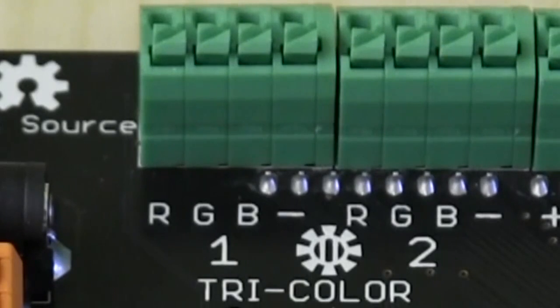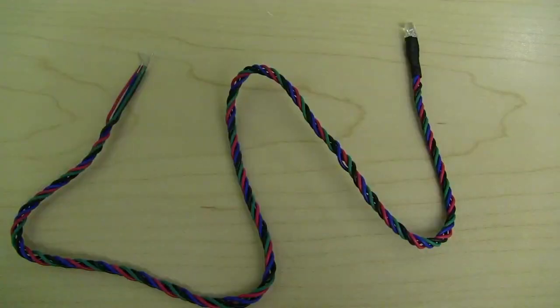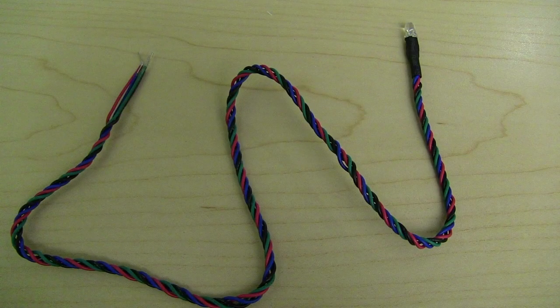Now let's move on to tri-color LEDs. There are two tri-color LED ports, also green in color. Your tri-color LED will have four wires coming off of the light: